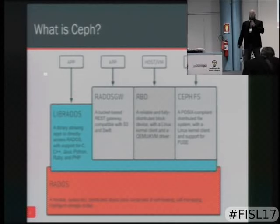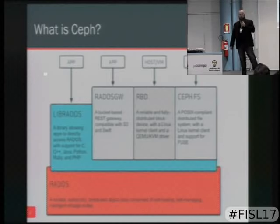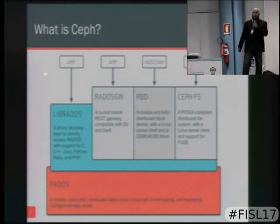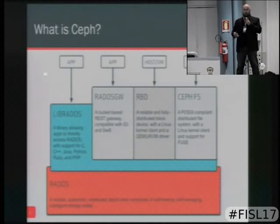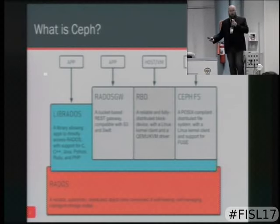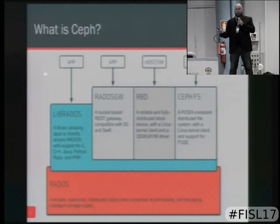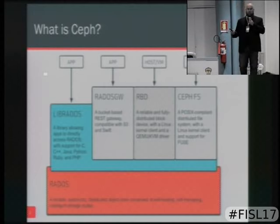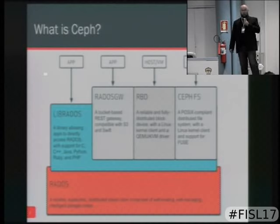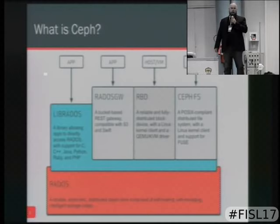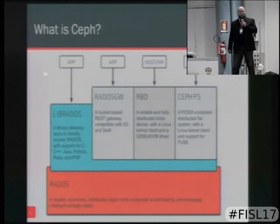Basically what this means is you take a whole bunch of hardware, you put it together, and then you can use it for a number of different applications — the most popular of which right now is OpenStack. We have a very tight integration with OpenStack. Our block device plugs in directly with Cinder and Glance. Our object interface can talk either Amazon S3 or OpenStack Swift and can be a drop-in replacement for object storage in your OpenStack cluster.